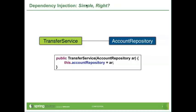Dependency injection is that simple. Whether it's through a constructor or through a setter, these are details, but the idea is the transfer service shouldn't have to look up that dependency. It shouldn't have to do a JNDI lookup or a service locator lookup or a singleton lookup or any of that kind of thing. You could say dependency injection is object orientation as it was meant to be.